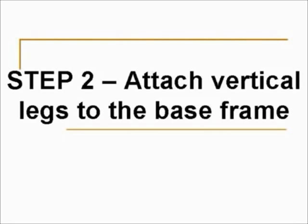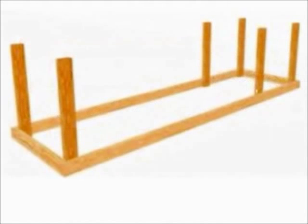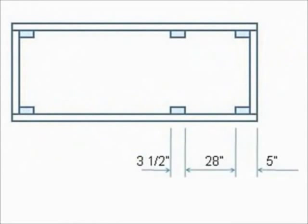Step two, attach the vertical legs to the base frame. To do this you need to make six legs. Again, these are two by four cut to the length of 36 inches. Position the legs according to this diagram and nail them using four nails per connection. Once again, it might be a good idea to use a framing square to confirm that the legs are square before moving to step three.